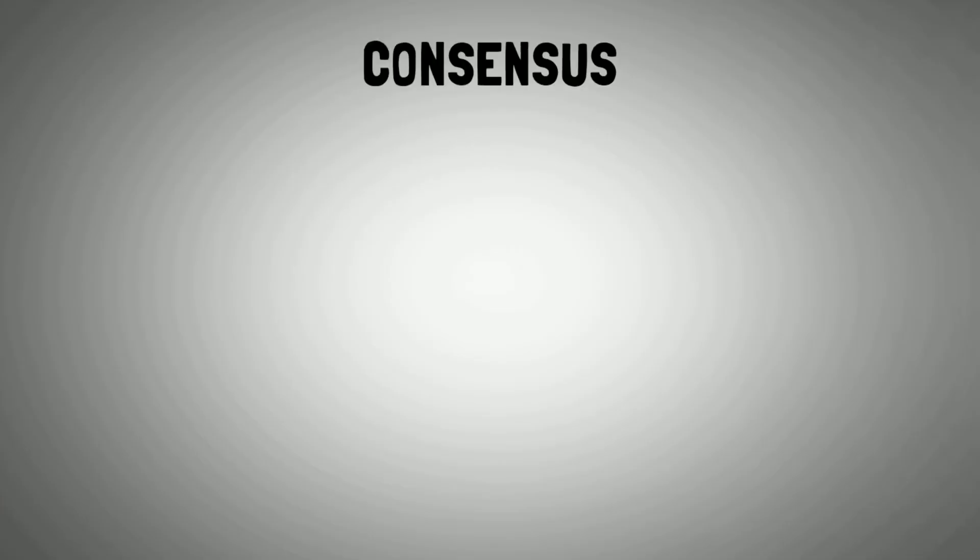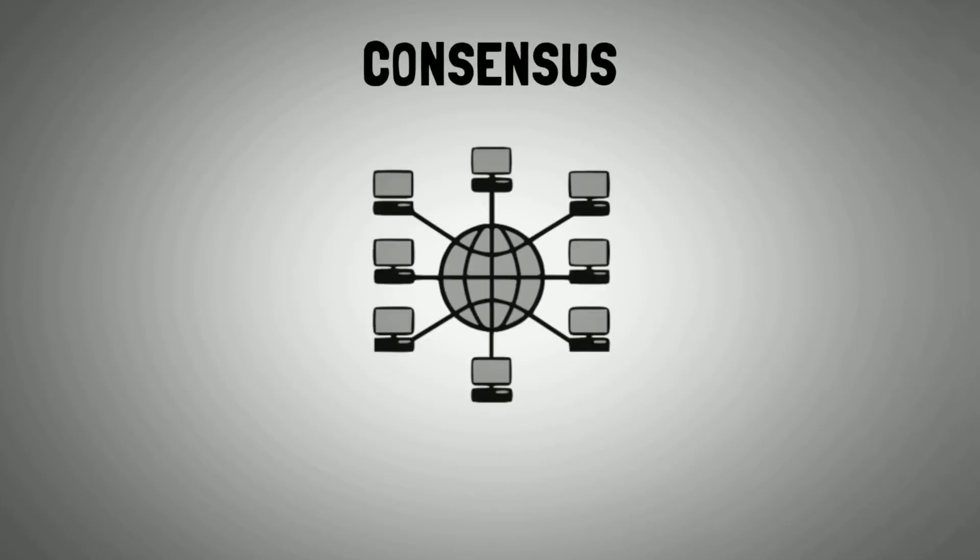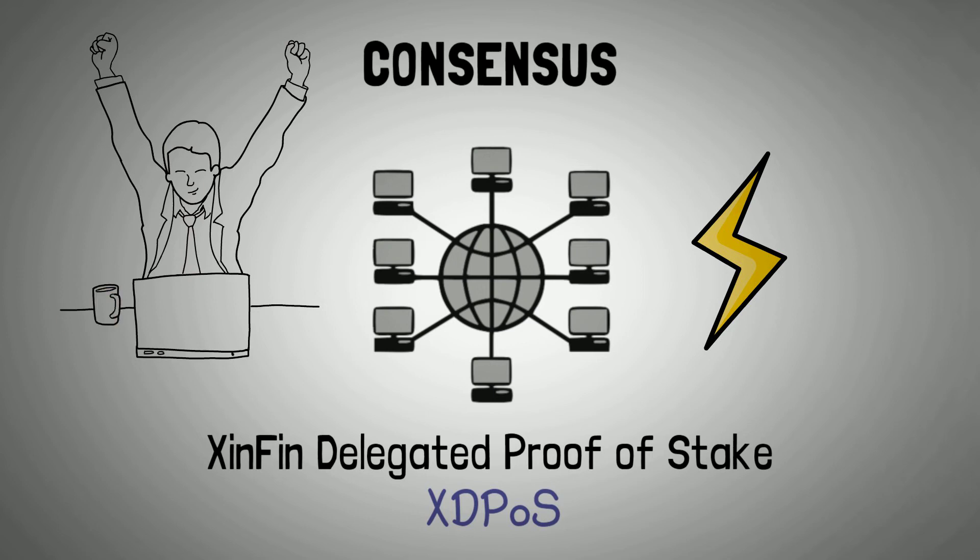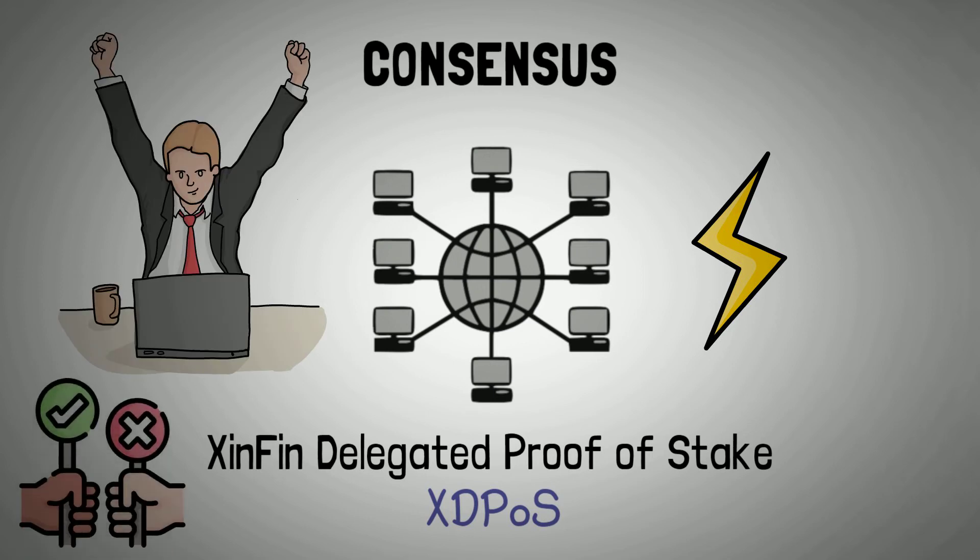Consensus: The consensus mechanism used on the network is called Xfin Delegated Proof-of-Stake, or XDPOS. It is a more energy-efficient mechanism, providing high performance by leveraging a unique stakeholder approval voting to resolve consensus issues promptly.